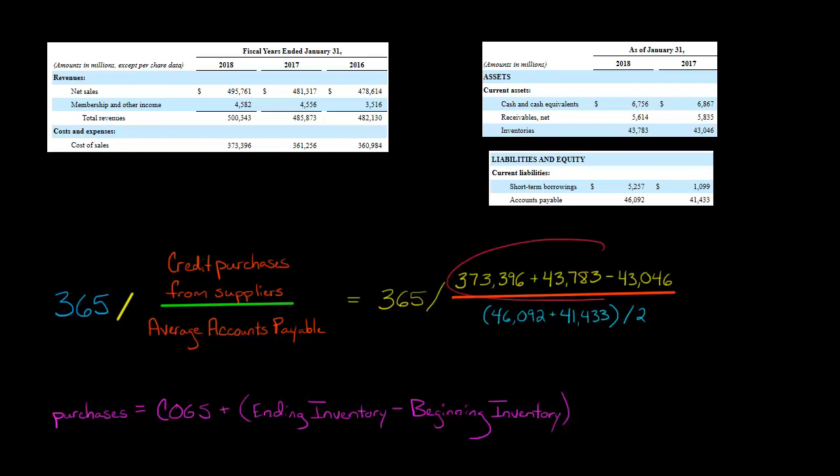And then we had our ending inventory right here. So this is how we calculate the credit purchases from suppliers. And then we're going to divide that. So our denominator is going to be the average accounts payable balance. Now, here's our accounts payable. We're going to take $46.092 billion plus $41.433 billion. So we take those two amounts, and then we divide it by two. That's going to be our denominator.